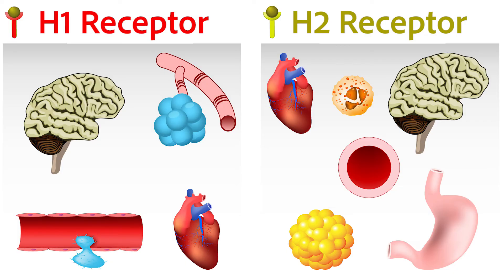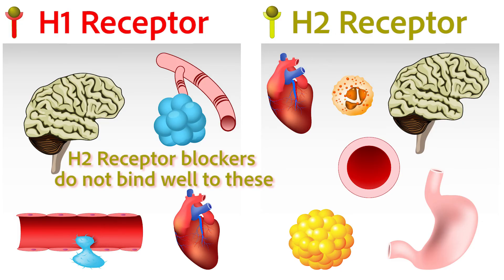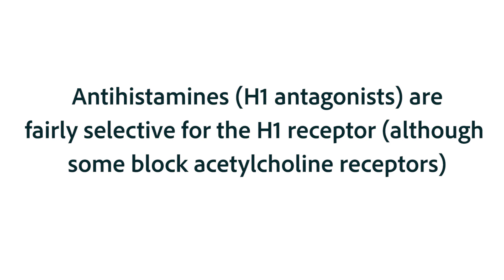There are three subsets of histamine receptors, and they're located in different organs. When you take a normal dose of a histamine 2 receptor blocker like ranitidine, there is very little crossover onto the histamine 1 receptor, so it's of very little use in allergic rhinitis. We say that the histamine 2 receptor blockers are fairly selective for the histamine 2 receptor, and the antihistamines that work in allergic rhinitis are fairly selective for the histamine 1 receptor. Interestingly, some histamine 1 antihistamines actually bind to acetylcholine receptors, which gives them some additional side effects.